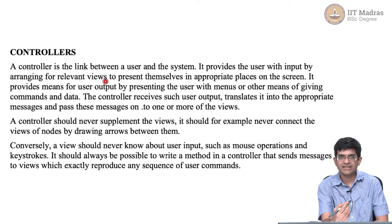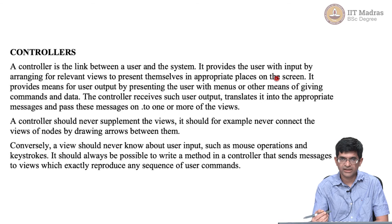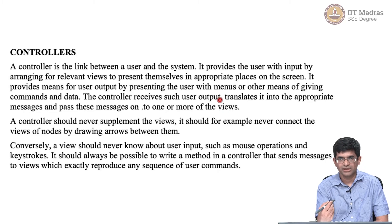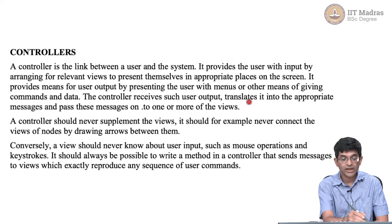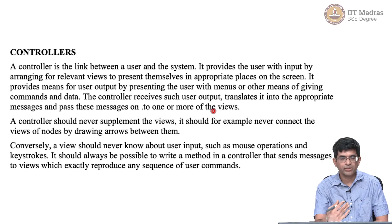The controller provides input to the user by arranging for relevant views to present themselves. That means the controller finally decides what gets displayed on screen — and not just that, but in appropriate places on the screen. It could be things like a menu bar, a toolbar, or some button that needs to be pressed. The second part is that the controller receives user output — once again turned around so the user is generating output which becomes input to the system. What the controller does is receive that, translate it into appropriate messages, and pass them to the model and eventually back to the views. The controller is very closely tied with the view while also making sure the user never directly interfaces with the model.